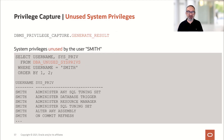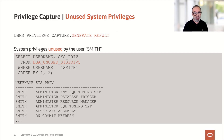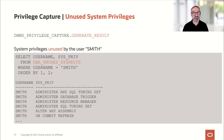Even more important, and I figure this is the information you're typically looking for, are the unused privileges — what does Smith have and really doesn't need? We found that Smith had ADMINISTER ANY SQL TUNING SET, DATABASE TRIGGER, RESOURCE MANAGER, ADMINISTER SQL TUNING SETS, ALTER ANY ASSEMBLY, ON COMMIT REFRESH — all these privileges were granted implicitly to the application user, but none of them was used. That's cool — let's revoke them right away.